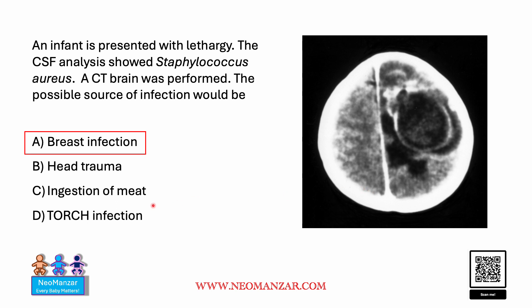Ingestion of meat we can consider in bigger children or adults — they can have some parasitic cysts — but this doesn't look like a cyst. This looks like an abscess. So that is again not the right choice.